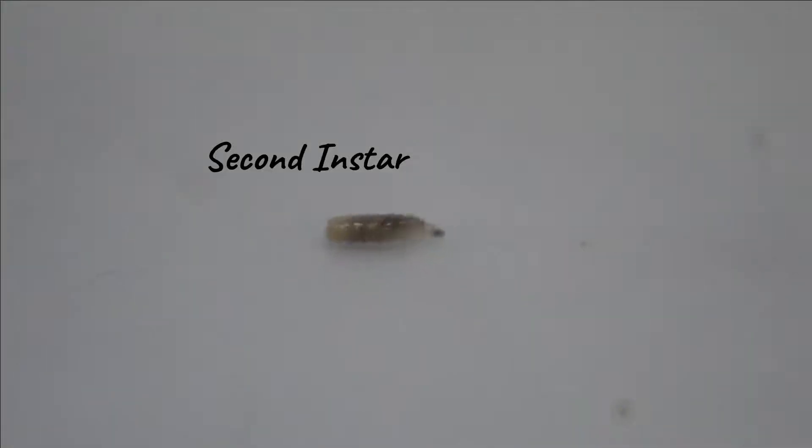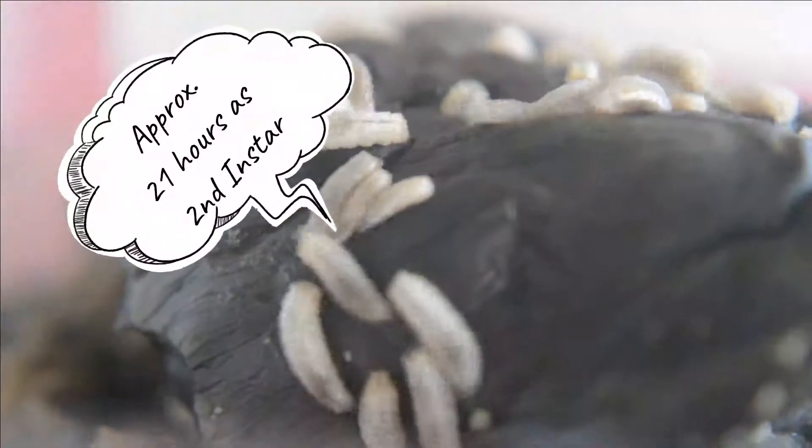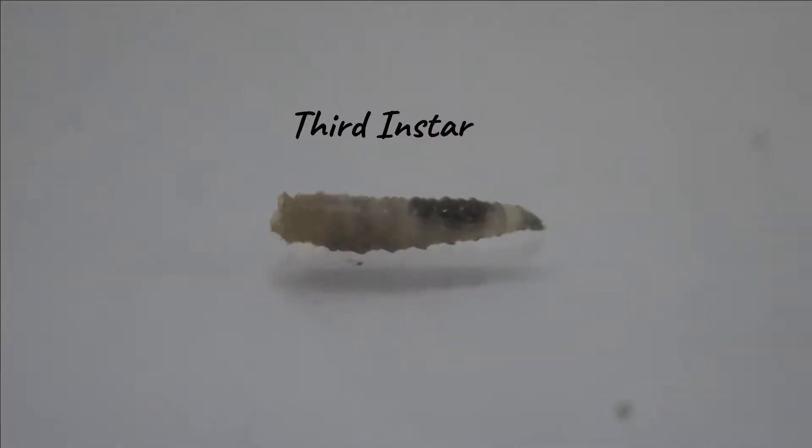Then, they will become the second instar larvae with 3 to 4 millimeters in length and two slits at their posterior spiracle. They will spend at least 21 hours in this molt. The next stage is the third instar larvae where they